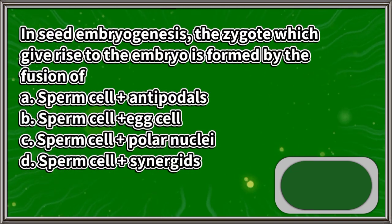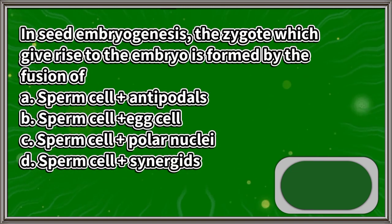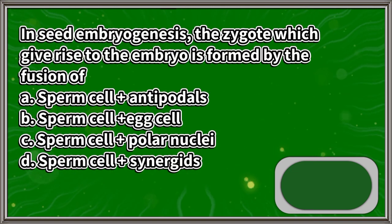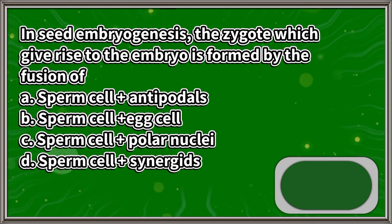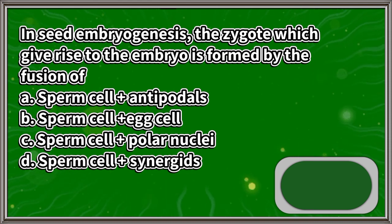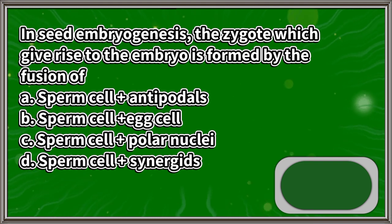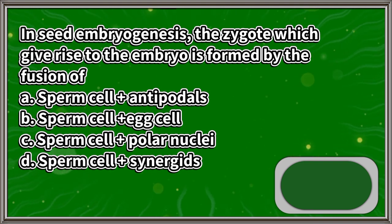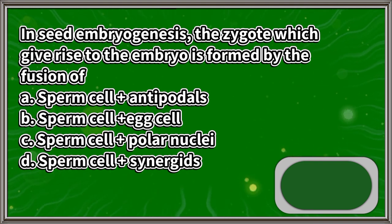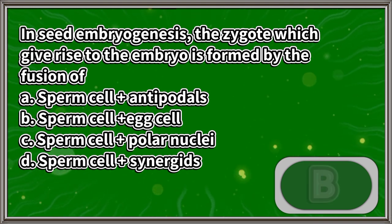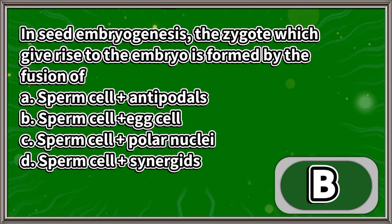In seed embryogenesis, the zygote which gives rise to the embryo is formed by the fusion of: A. Sperm cell plus antipodals, B. Sperm cell plus egg cell, C. Sperm cell plus polar nuclei, D. Sperm cell plus synergids. The answer is letter B.